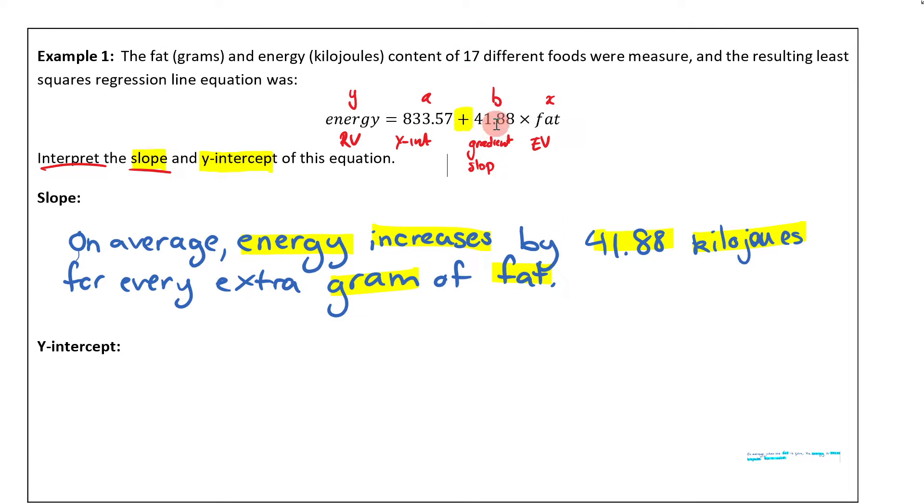It's increasing by the gradient itself, so by 41.88 kilojoules for every extra gram of fat.